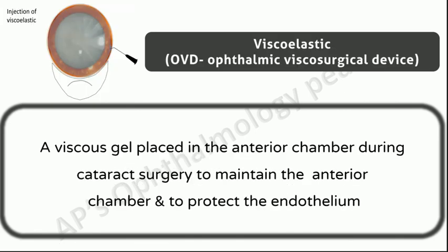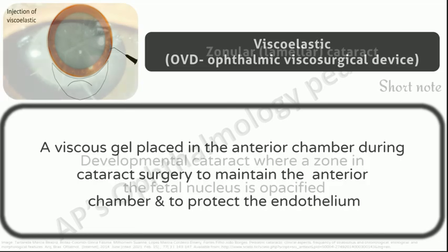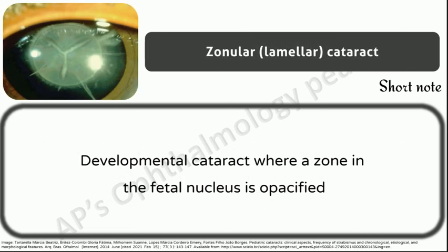Viscoelastic, or ophthalmic viscosurgical device as it is nowadays called: a viscous gel placed in the anterior chamber during cataract surgery to maintain the anterior chamber and to protect the endothelium. Zonular or lamellar cataract: a developmental cataract where a zone in the fetal nucleus is opacified. It is the most common type of visually significant cataract.